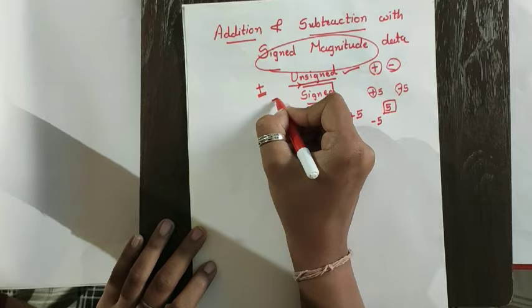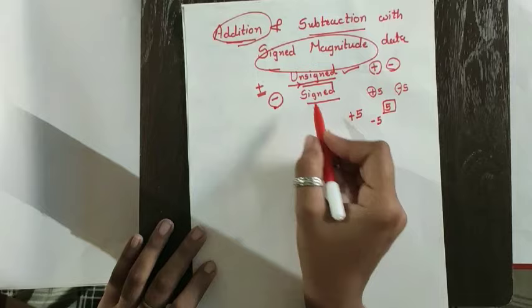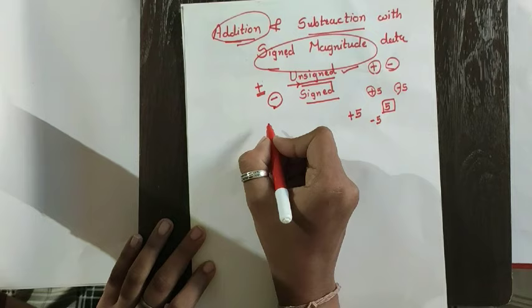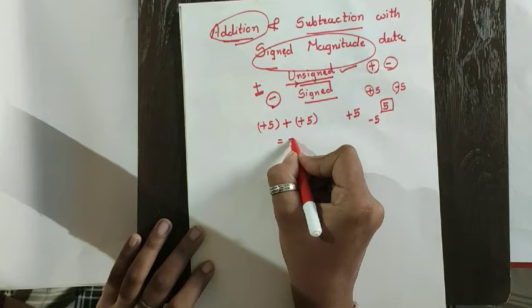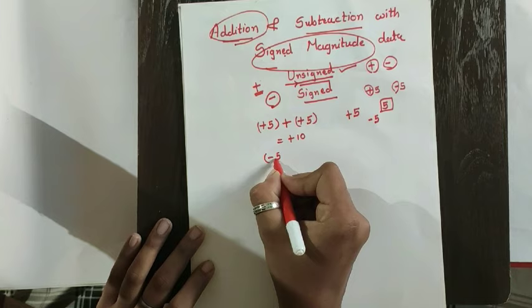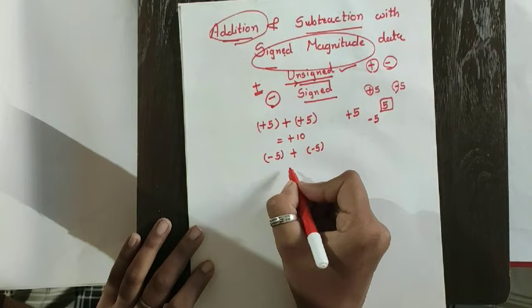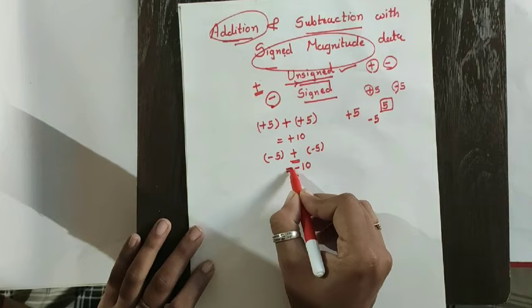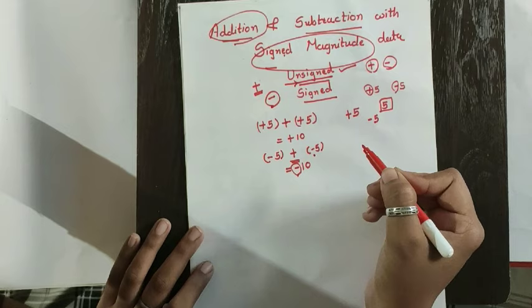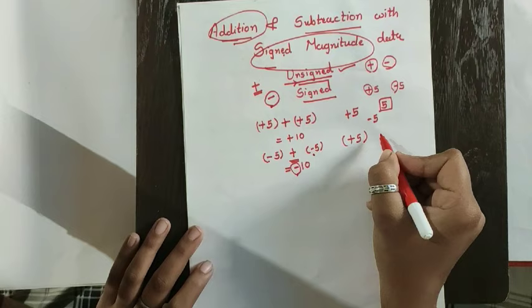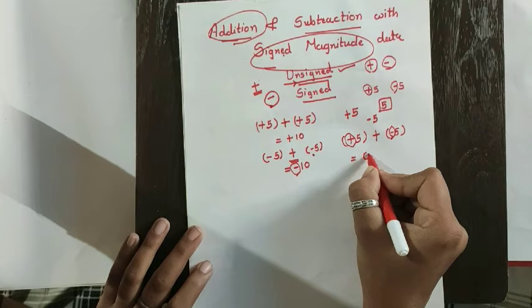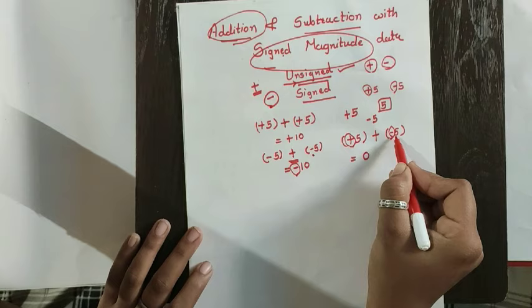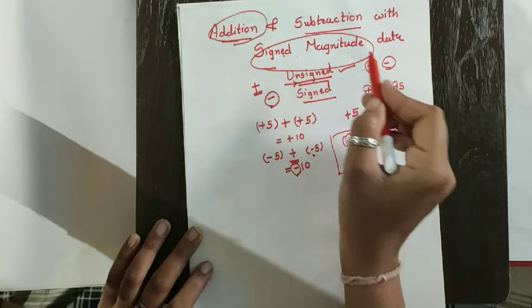When we perform addition or subtraction with sign magnitude data there is a vast difference. With unsigned data, addition is always addition and subtraction is always subtraction. But with sign magnitude data in addition we have a few possibilities. For example, if both numbers are positive — plus 5 and plus 5 — then addition gives plus 10. If both are negative — minus 5 and minus 5 — addition gives minus 10. But if one number is positive and another is negative and we apply addition, then subtraction is actually performed and the answer here is 0.